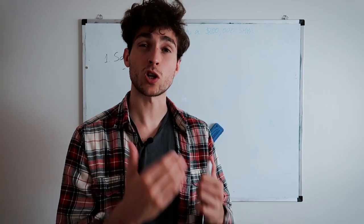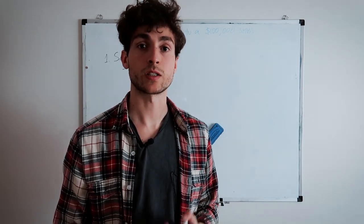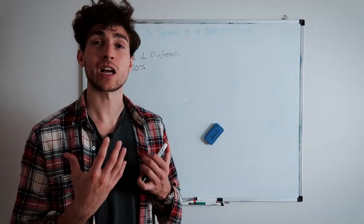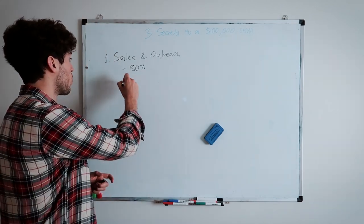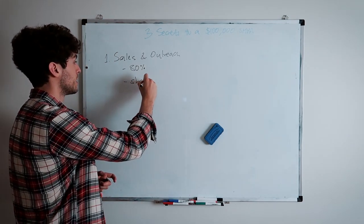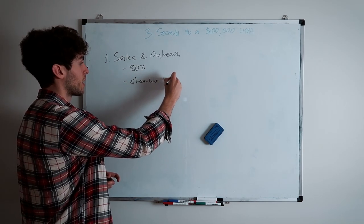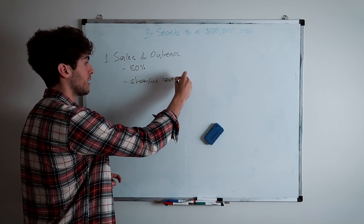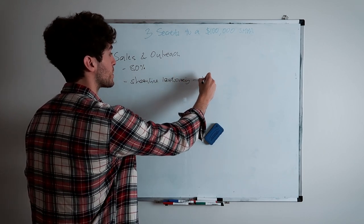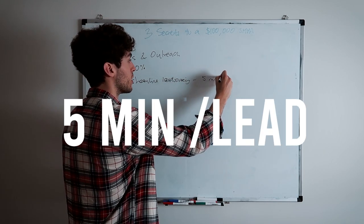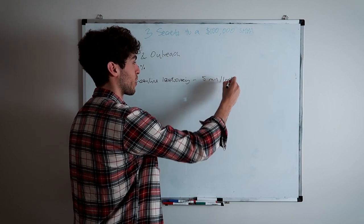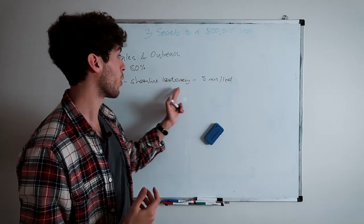So first things first, on the first pillar, on the prospecting and lead sourcing side of things, you want to make sure that you streamline the process as much as you possibly can. Streamline lead sourcing. The way you do this, a key component that you want to keep in mind, is you don't want to spend more than five minutes per lead. And this is just to reduce a lot of complexity.